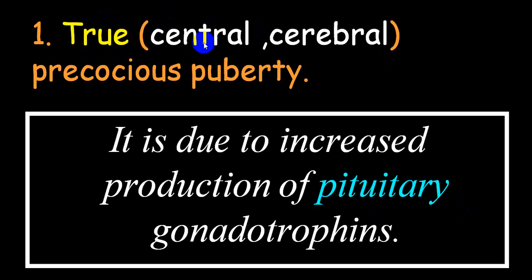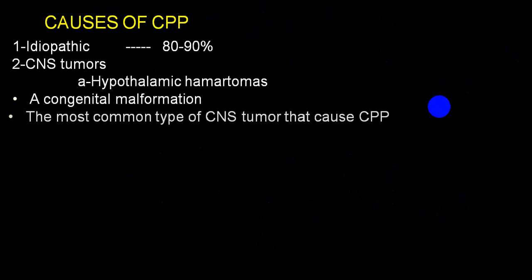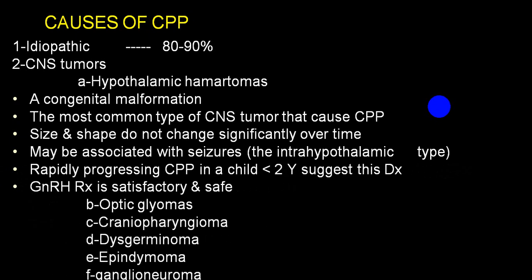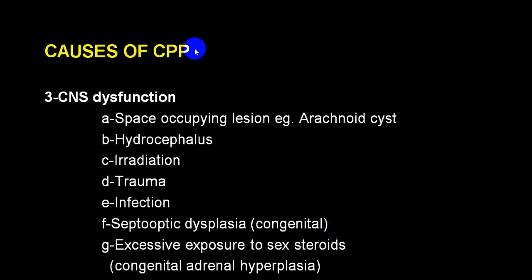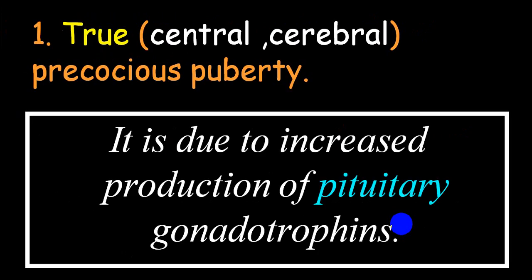In the true variety — central or cerebral — it is because of increased production of pituitary gonadotropic hormones. The most common cause is idiopathic, accounting for 80 to 90% of cases. It can also be due to CNS tumors where gonadotropin-releasing hormone is released — hypothalamic or pituitary gland tumors, optic gliomas, craniopharyngiomas, germinomas, ganglioneuromas. CNS dysfunction causes include hydrocephalus, irradiation, trauma, infection, congenital abnormalities, and congenital adrenal hyperplasia.